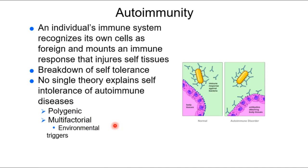A trauma or major inflammatory event could also be a trigger. We don't have a single theory — scientists aren't 100% certain what leads to autoimmunity. We can see two people with the same genes where one develops an autoimmune disease and the other doesn't. So even knowing there's a genetic basis, there are still missing puzzle pieces. Autoimmune disease in the developed world is on the rise, which is a big question in science.